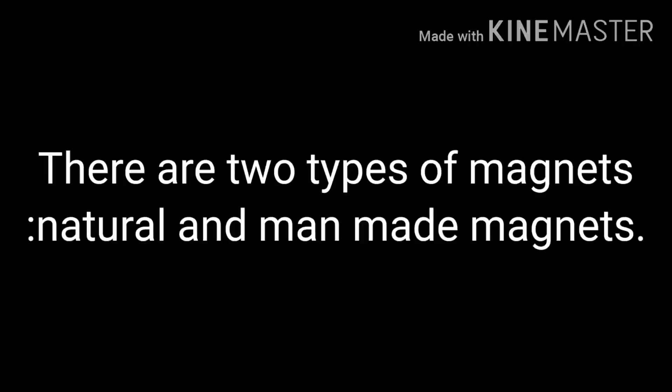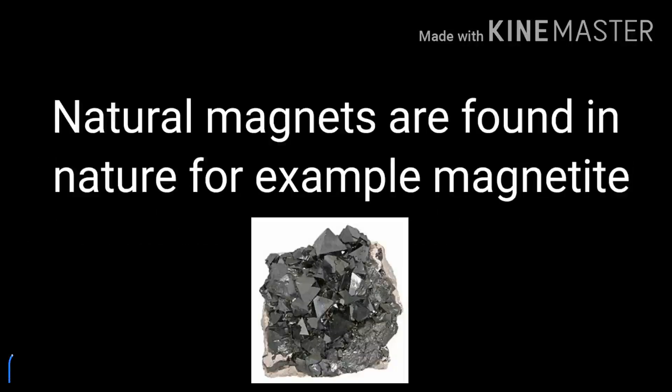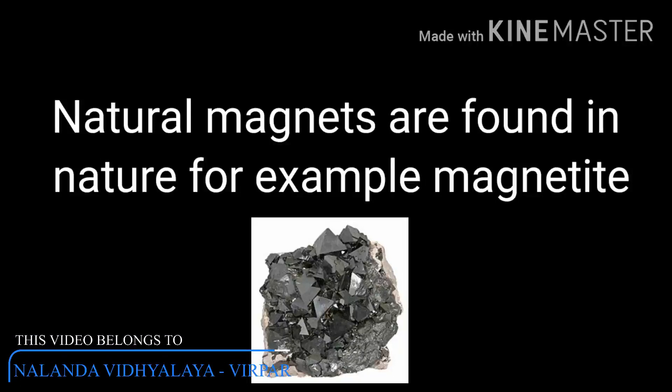There are two types of magnets: natural and man-made magnets. Natural magnets are found in nature, for example, magnetite. It is believed that the magnet was discovered by a Greek shepherd named Magnus. Once upon a time Magnus went to a forest with his wooden stick, which also had iron material. Suddenly, he observed that the iron material was stuck to a big rock. This rock was a magnet, and the rock was named after his name Magnus.